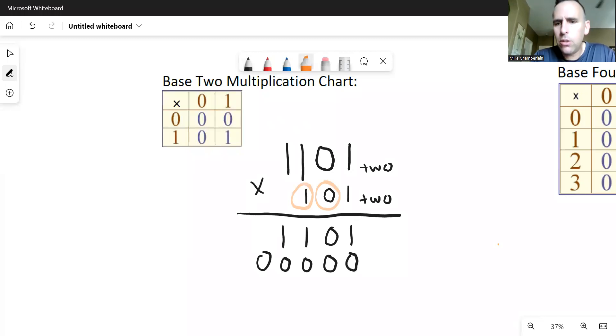Lastly, we go to the third place value over, which is actually the fourth place. Since we're the third one over, we have two placeholders. We have two zeros before we get started. And now I multiply one times one, one times zero, one times one, one times one. And I will get one, zero, one, and one.